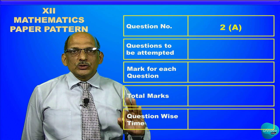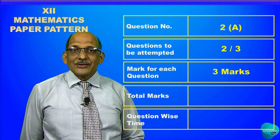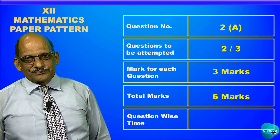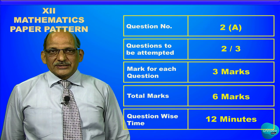Then in question number two, there are two sub-questions: 2A and 2B. In 2A, you have to solve two out of three questions. Each question carries three marks, so total marks for question number 2A are six marks. The time allotted by the board to complete question number 2A is 12 minutes.